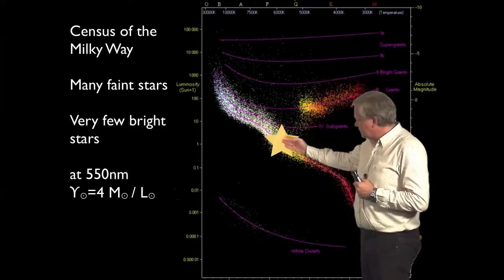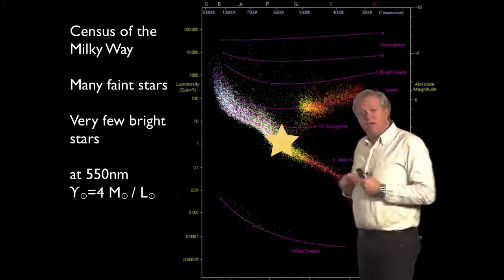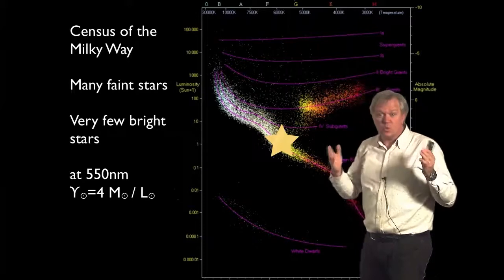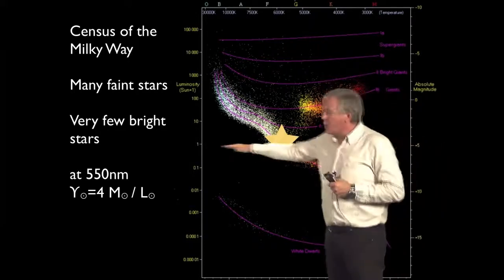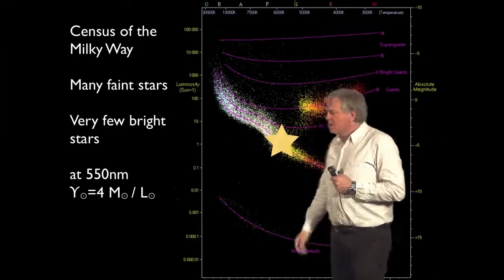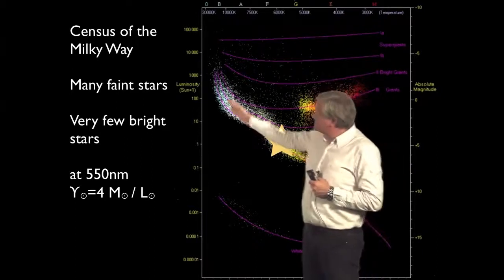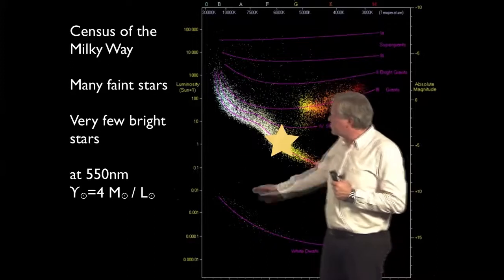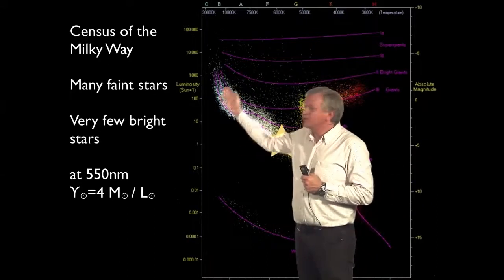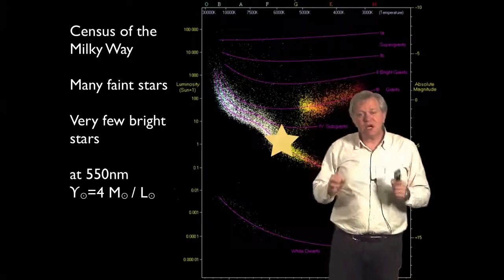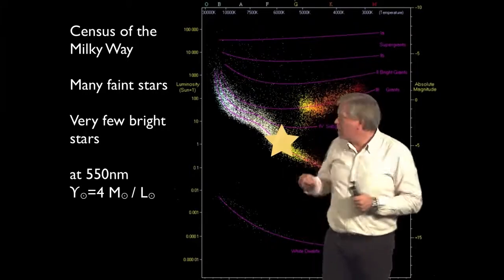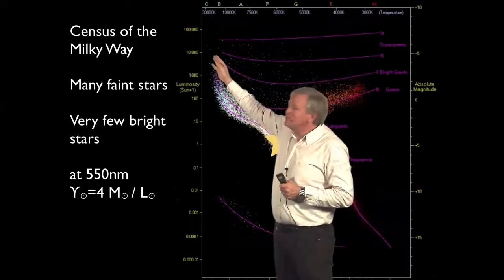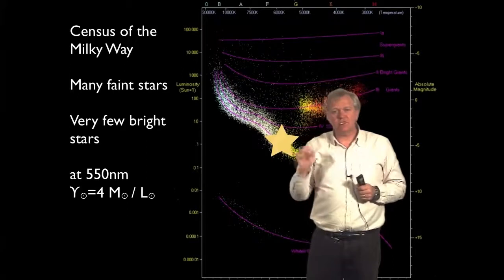And you can see our Sun has a temperature of about 5,800 degrees, weighs 1 solar mass, and is 1 solar luminosity. But of course, there are stars here that turn out to be much brighter than our Sun. They're hotter than our Sun. And the stars up here are about 10 times more massive than our Sun, but 1,000 or even 10,000 times brighter.